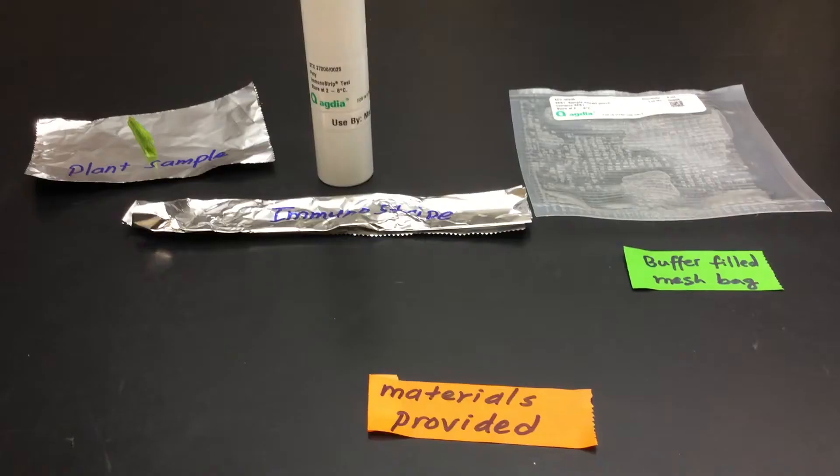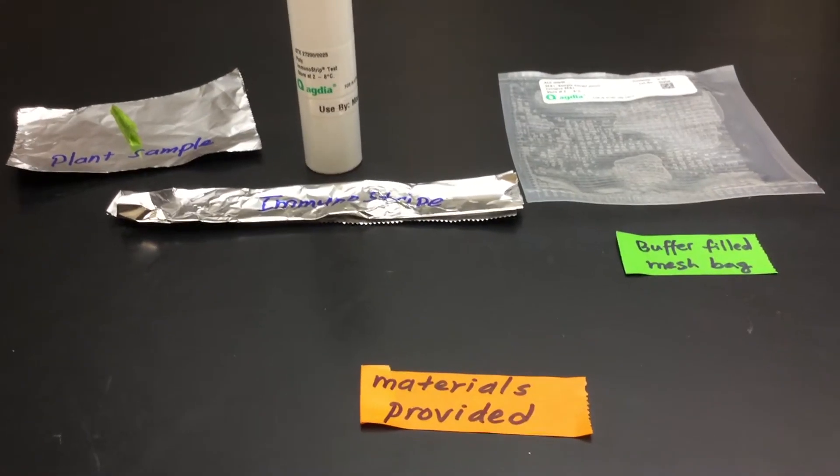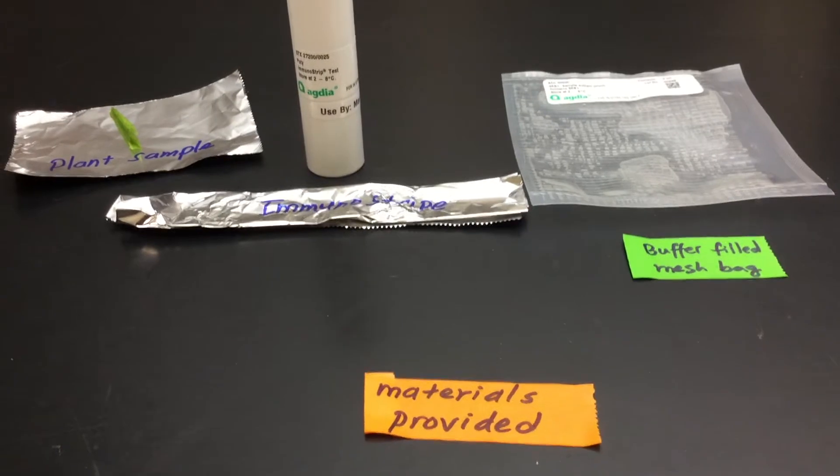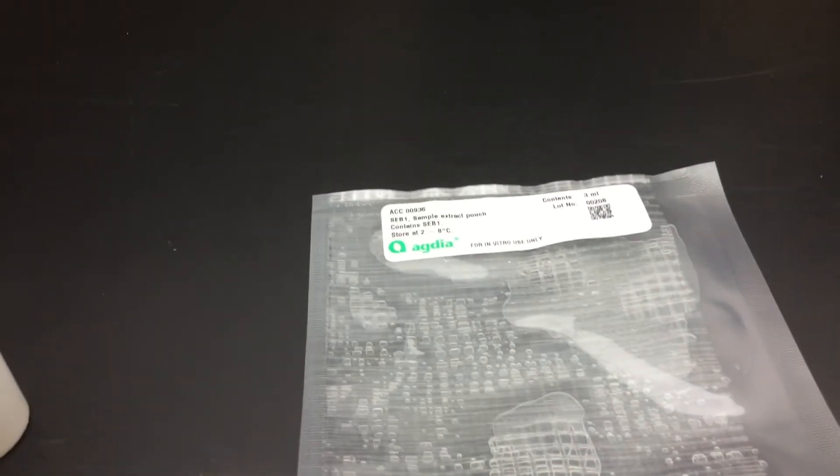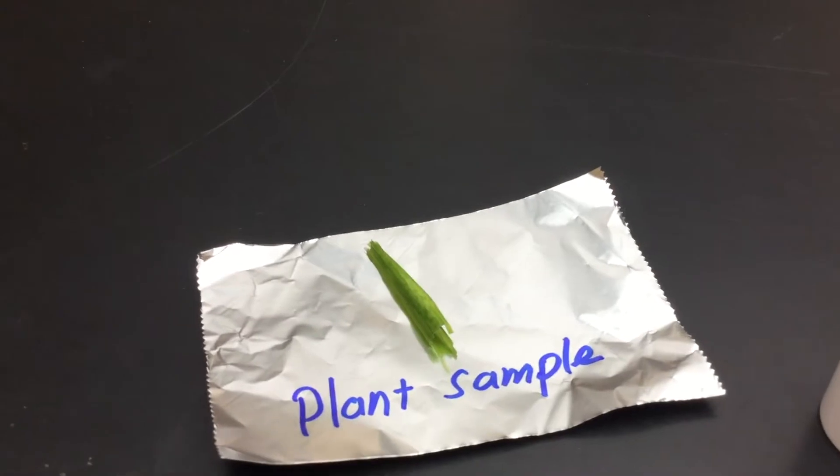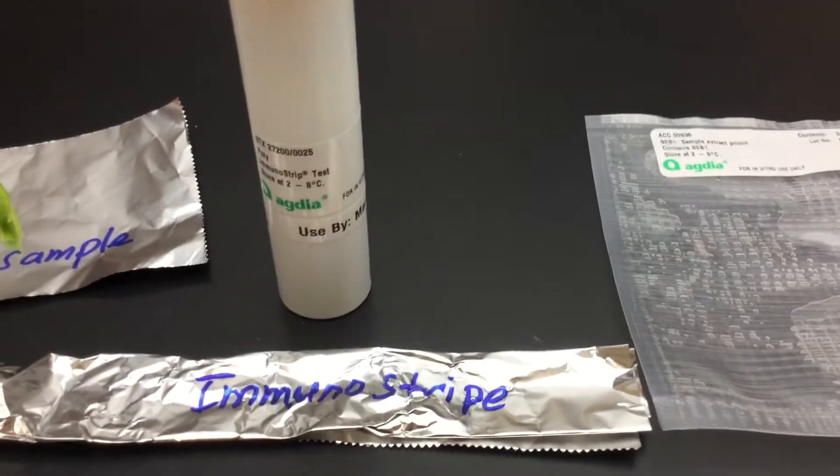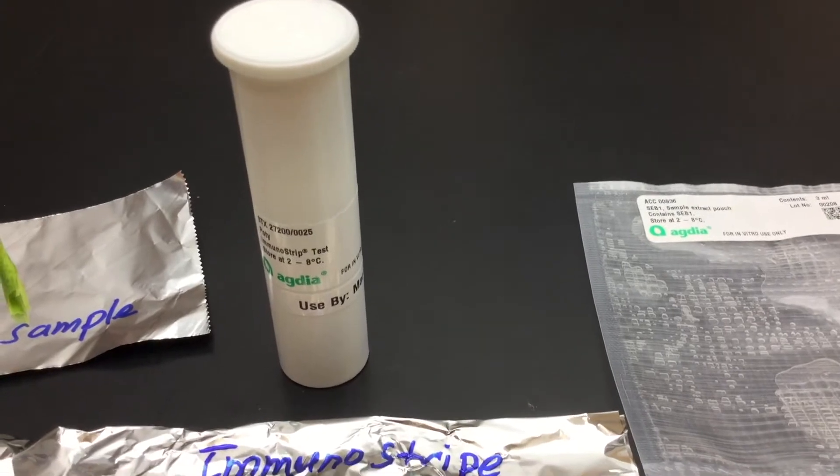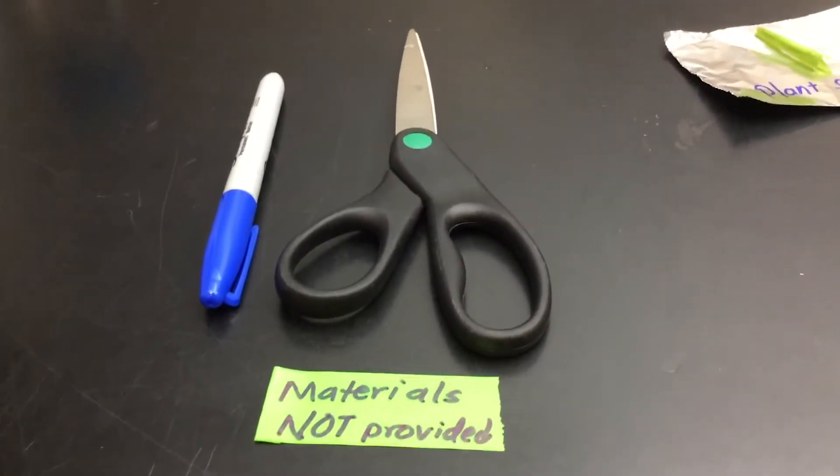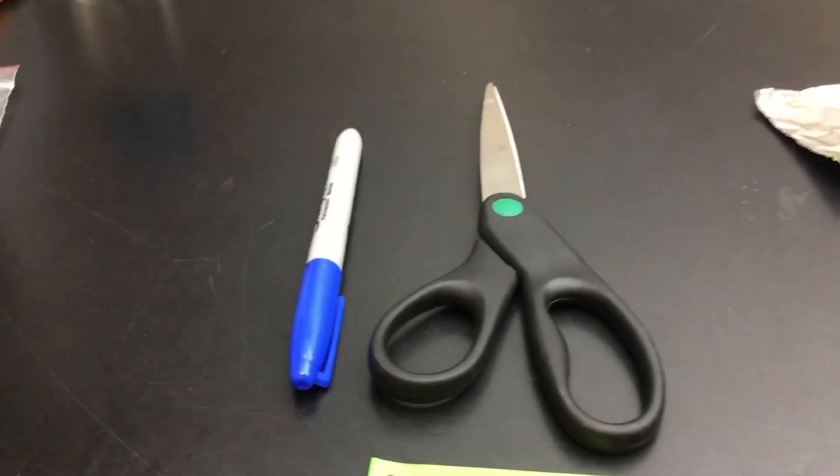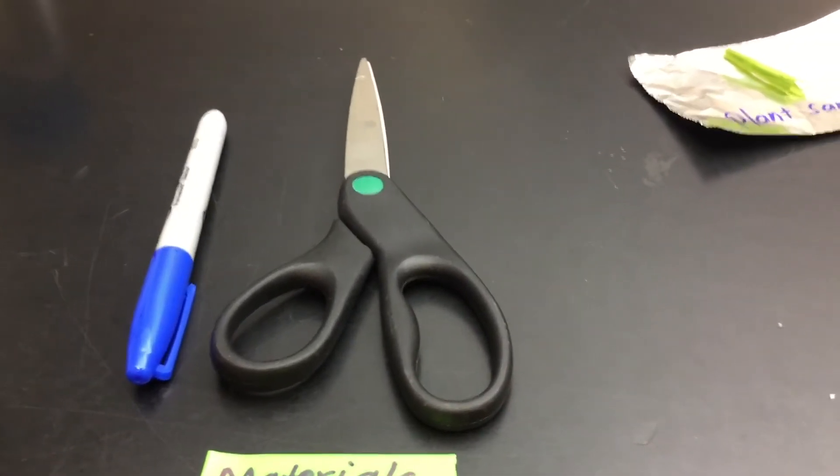Let's talk about the materials required for this test. The materials supplied for you in this class are a buffer-filled mesh bag, plant sample, and an immunostripe. The extra materials needed that are not supplied are a sharpie or marker or any blunt-end object and scissors.